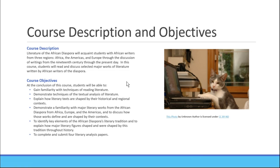Course objectives include gaining familiarity with techniques of reading literature, demonstrating techniques of textual analysis of literature, explaining how literary texts are shaped by their historical and regional contexts, and demonstrating familiarity with major literary works from the African diaspora from Africa, Europe, and the Americas.